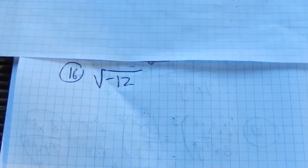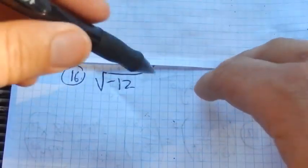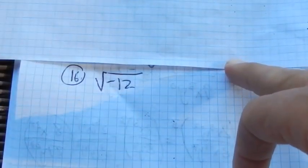This is Math 98 Practice Test 2. This is problem number 16. We're supposed to simplify square root of negative 12.